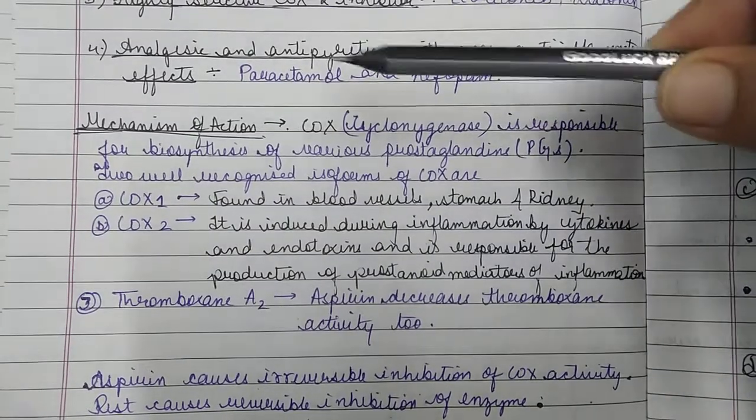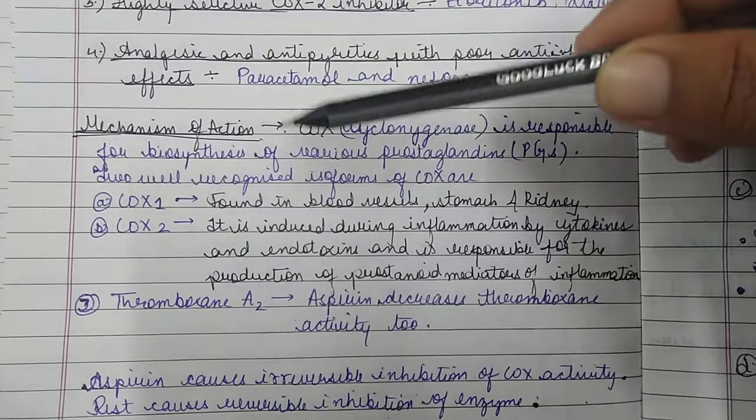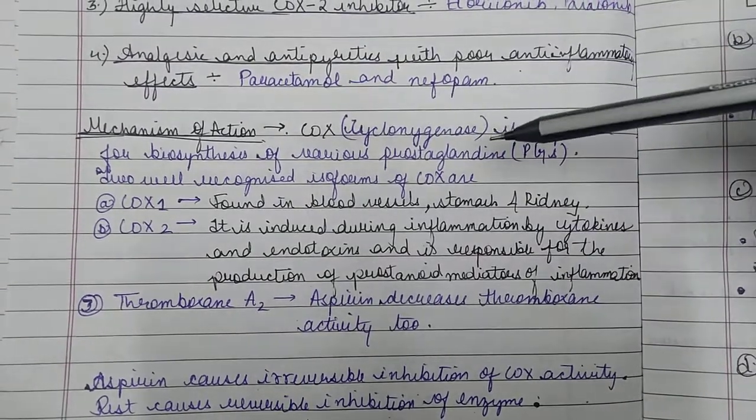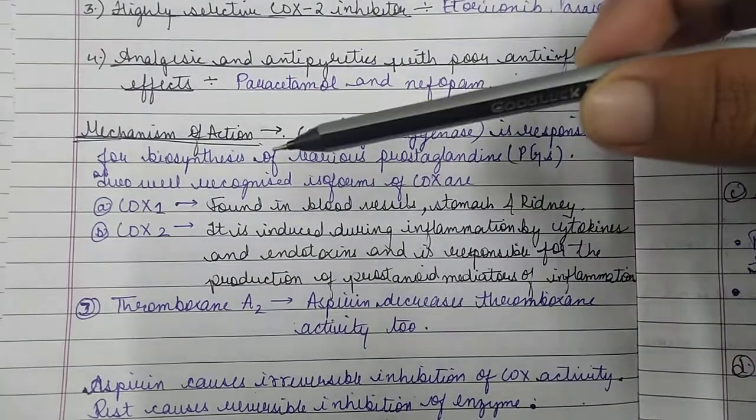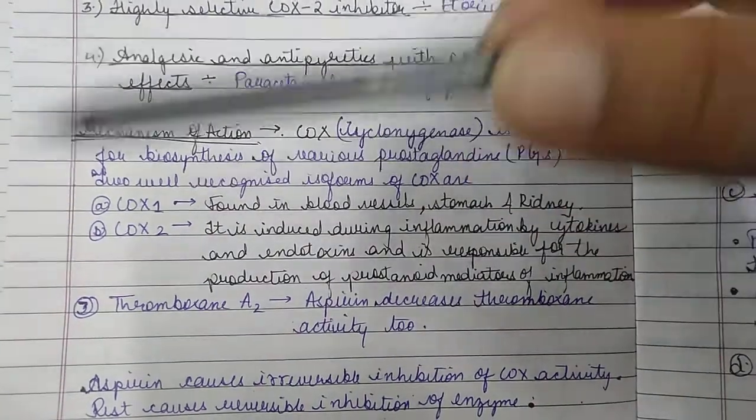As I told you, COX, that is cyclooxygenase, is responsible for the biosynthesis of various prostaglandins. We know that there are two well-recognized isoforms of COX: COX-1 and COX-2.